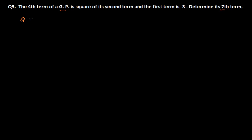We have the first term a equals minus 3. We haven't got the common ratio, but we have one hint: the fourth term of the GP is the square of its second term. And we need to find out the seventh term.